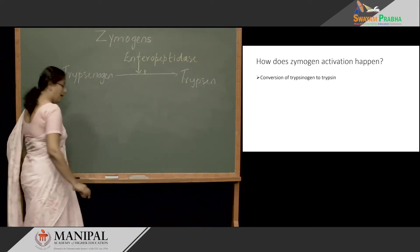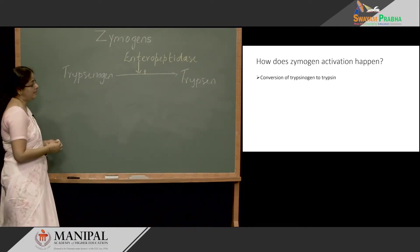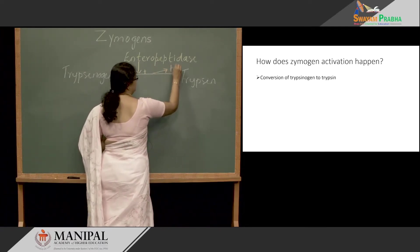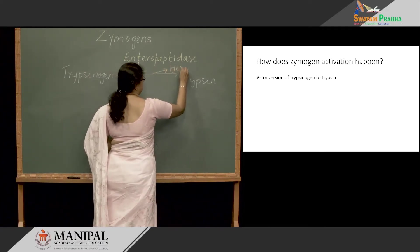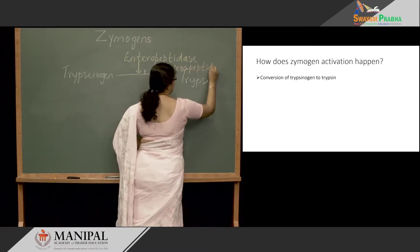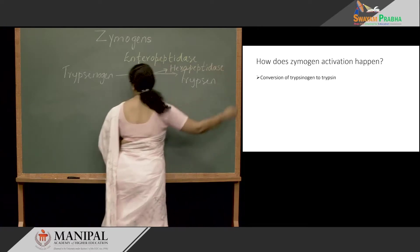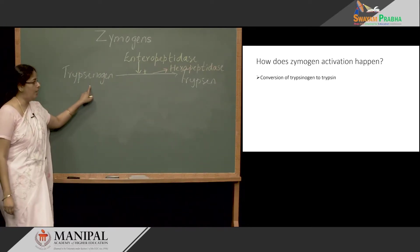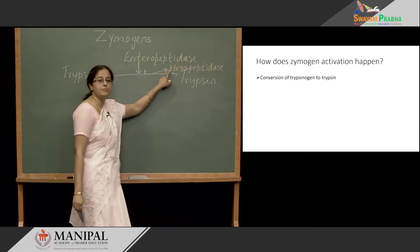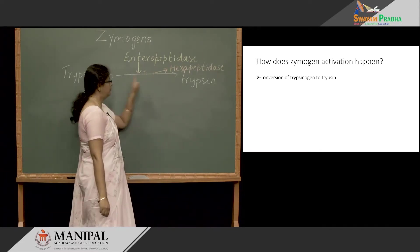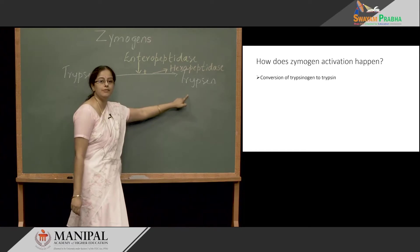During the activation process, there is release of a hexapeptide. A peptide bond in trypsinogen is broken down, releasing a hexapeptide from the N-terminal end. During this process, trypsinogen is converted to trypsin, which is the active form.